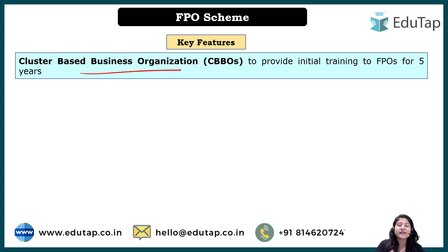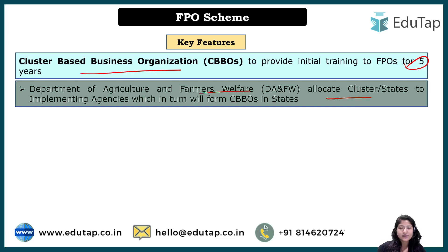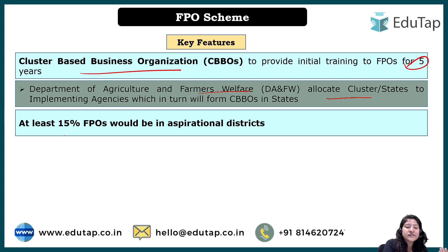Key features of the scheme include: Cluster-Based Business Organizations (CBBOs) will provide training for the five-year duration. The Department of Agriculture and Farmers' Welfare will allocate states to implementing agencies. Under this scheme, many stakeholders are involved — the Ministry of Agriculture and Farmers' Welfare will oversee everything. CBBOs will be formed to provide initial training to FPOs.